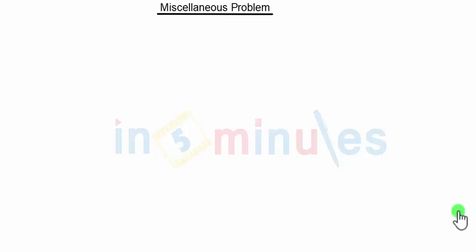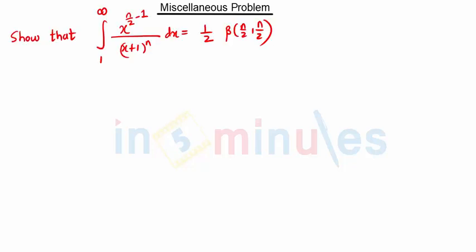Hello everyone, welcome to 'In Five Minutes.' In this video we are going to see the next type of miscellaneous problem of beta and gamma functions. This is our question — we have to show that this integration is equivalent to the given term.